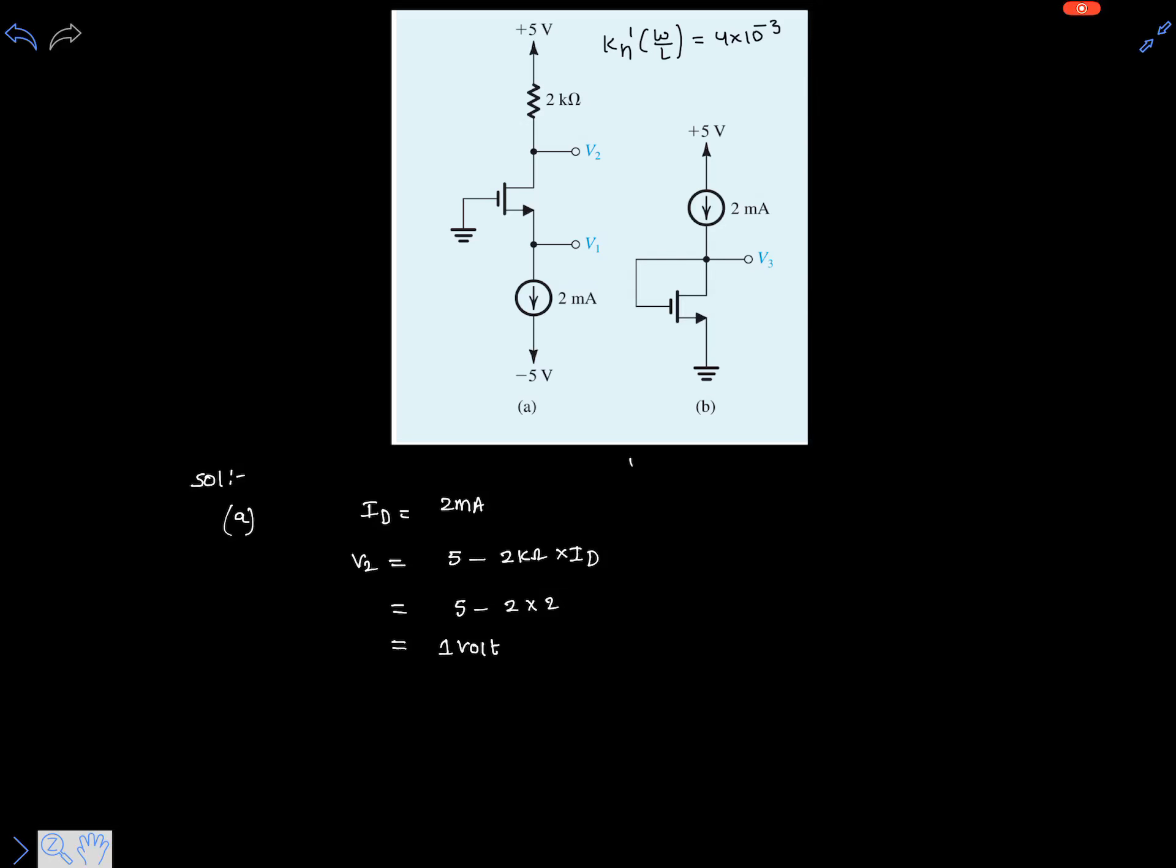Now let's calculate v1. We already calculated v2, which is 1 volt, and vg is zero. v2 is also vd, the drain voltage, so vdg, the drain-to-gate voltage, is greater than zero. So the transistor is in saturation region.